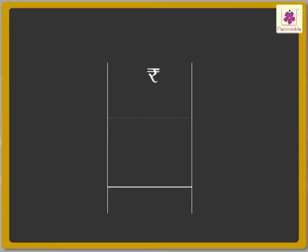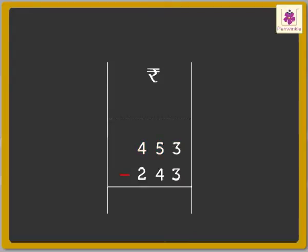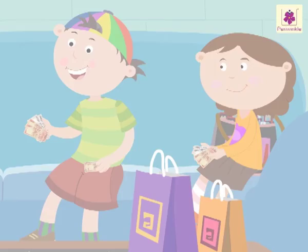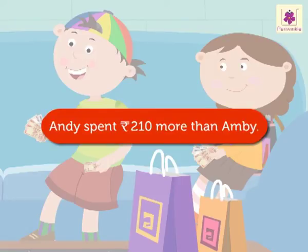To find the answer, we subtract 243 rupees from 453 rupees. 3 minus 3 equals 0. 5 minus 4 equals 1. 4 minus 2 equals 2. Upon calculation, the final answer we get is 210 rupees. So, Andy spent 210 rupees more than Ambie.